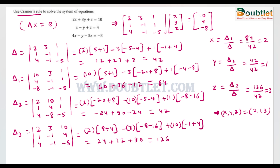This is the answer. To verify, we substitute into the second equation x − y + z = 4: 2 − 1 + 3 = 4. The equation is satisfied, confirming we have found the correct result.